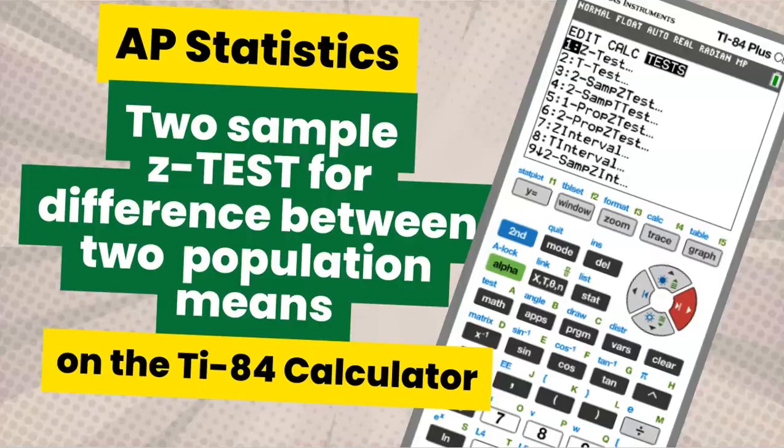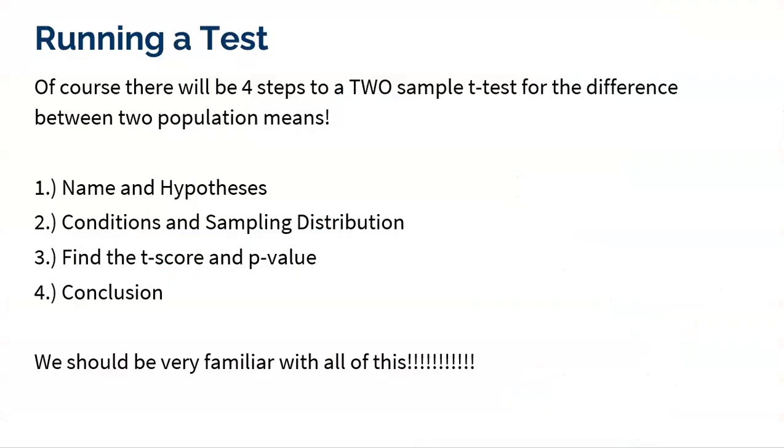Let's quickly review the steps for a two-sample test. First, we got to name the hypotheses and make sure that's in context. This is a two-sample t-test for the difference between, and then fill in the blank there.